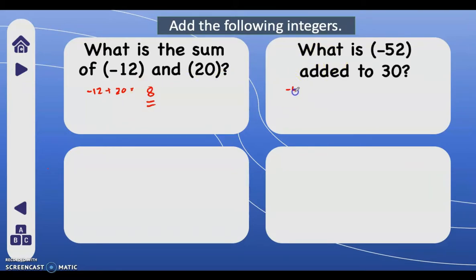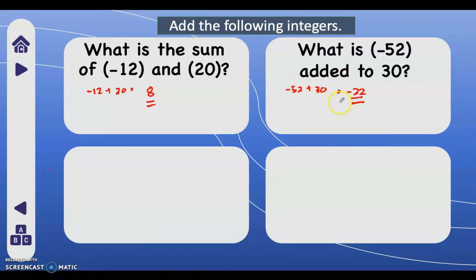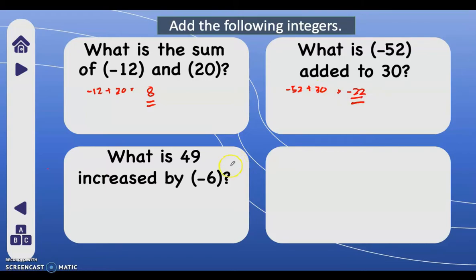Next: what is negative 52 added to 30? We compute 52 minus 30, that is 22. Then copy the sign of the greater absolute value — the absolute value of negative 52 is 52, and the absolute value of 30 is 30. Therefore 52 is greater, and we follow the sign of 52, which is negative, so our answer is negative 22.